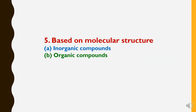The fifth basis of herbicide classification is based on molecular structure. On this basis, herbicides are classified into two categories: first, inorganic compounds, and second, organic compounds.